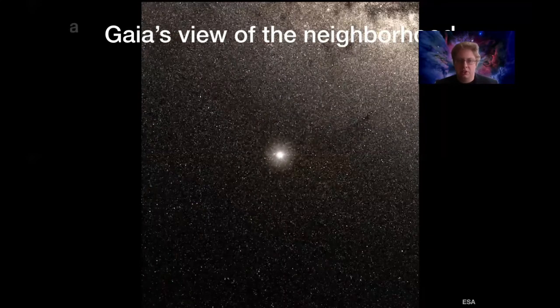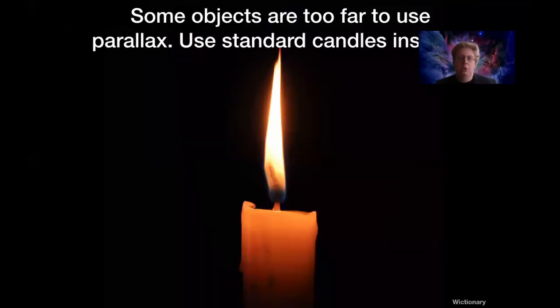But Gaia and parallaxes can only take us so far. What if we want to measure distances to objects that are even further away, where no matter what time of year we observe, they're just so far away from us that our observations look like they're moving in exactly the same direction. There's no change with respect to the background. In these cases we have to use other methods to do this.